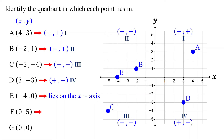Next, we have point F. Its x-coordinate is zero and its y-coordinate is five. Remember, if the x-coordinate of a point is zero, the point lies on the y-axis. Therefore, point F lies on the y-axis. It does not belong to any of the quadrants. If you plot it, you can also confirm that it is on the y-axis.